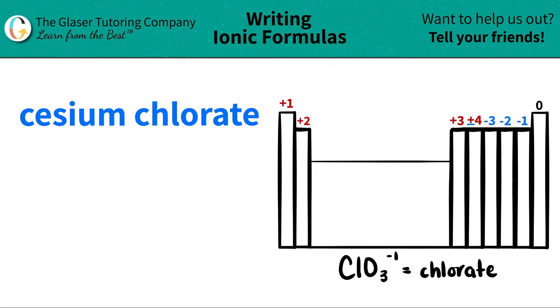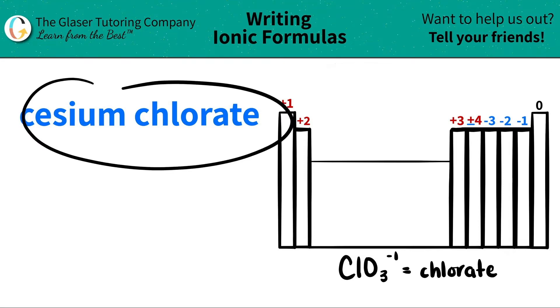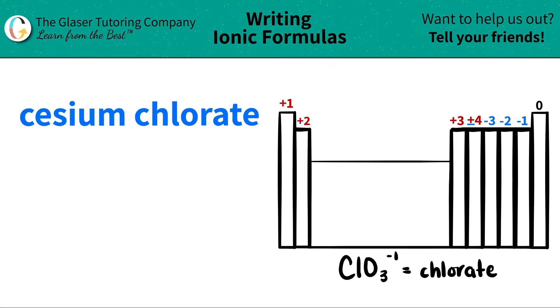Today we're going to be writing the formula for the ionic compound cesium chloride. So let's see where these are located on the periodic table, or if it's a polyatomic ion, and then we'll write the formula. So let's start from left to right.